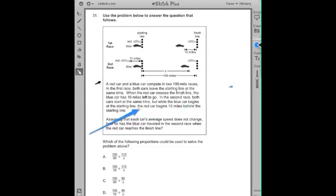In the second race, both cars start at the same time while the blue car begins at the starting line. The red car begins 10 miles behind the starting line. Assuming that each car's average speed does not change, how far has the blue car traveled in the second race when the red car reaches the finish line?